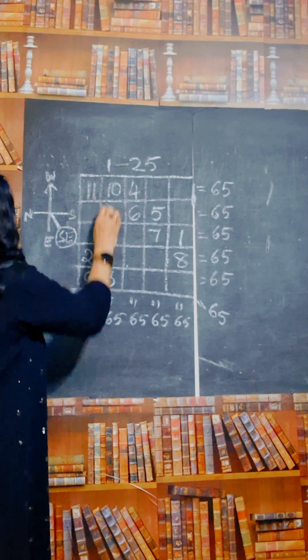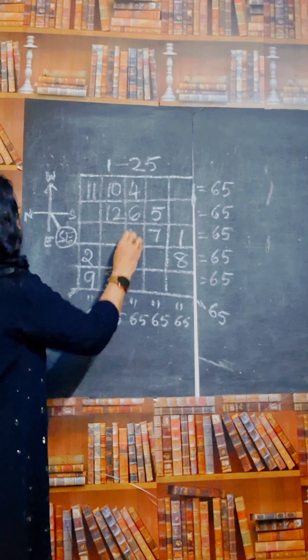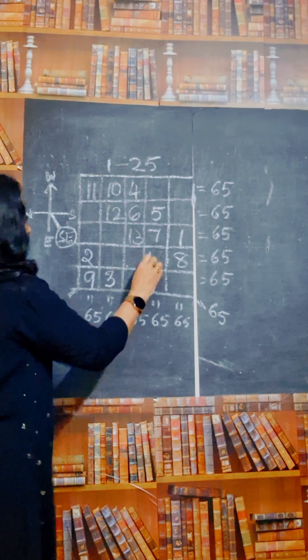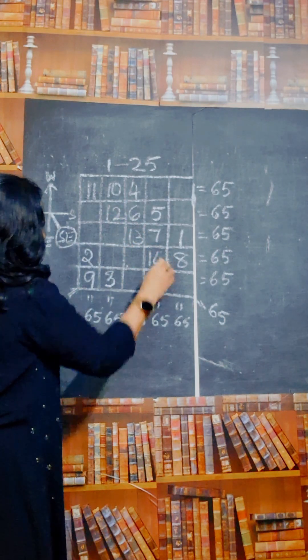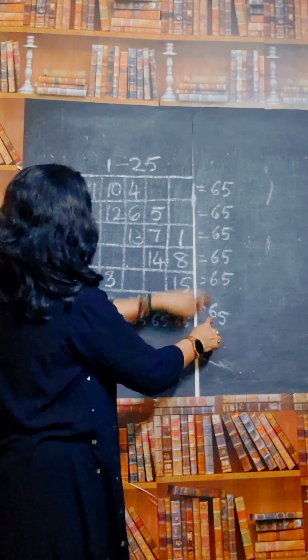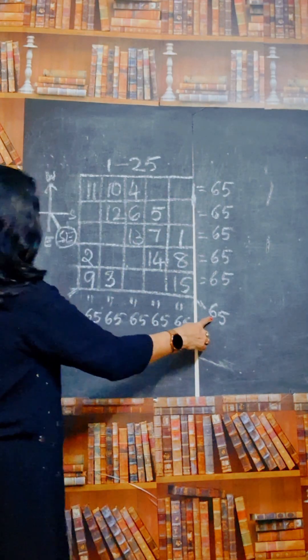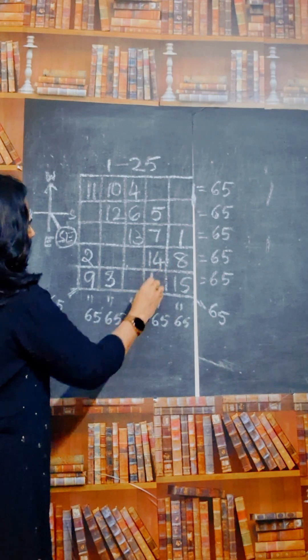11, south east. 12, south east. 13, south east. 14, south east. 15, again south east, but there is no box here and also here. So write in the next. 16.